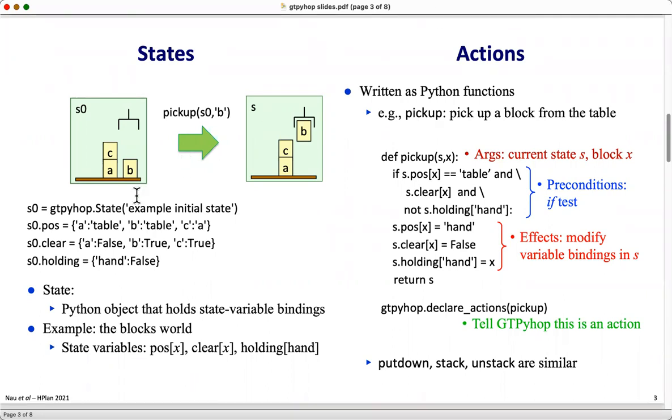Here is an example of a state in which block A is on the table, block B is on the table, block C is on A. A is not clear, B is clear, C is clear, and the robot hand is empty.